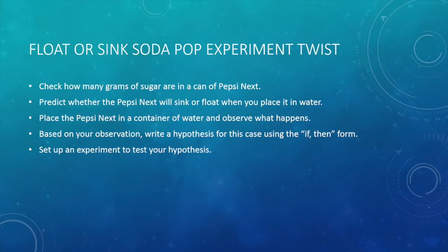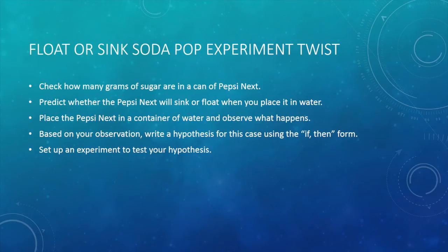Now let's add one last twist to our float or sink experiment. Check how many grams of sugar are in a can of Pepsi Next and predict whether it will sink or float in water. Place the pop in a container of water and observe what happens. Based on your observation, write a hypothesis using the if-then form and set up an experiment to test your hypothesis.